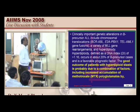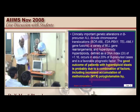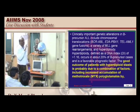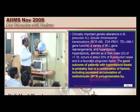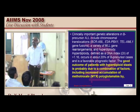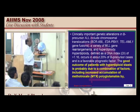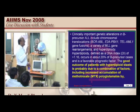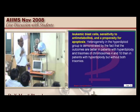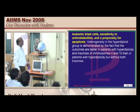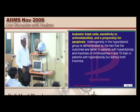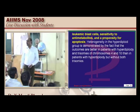Age between 1 to 10 years carries a good prognosis. A very high leukocyte WBC count is a bad prognostic factor. Less than 50,000 WBC count is favorable. Hyperdiploidy is good. The t(9;22) has no favorable relation.